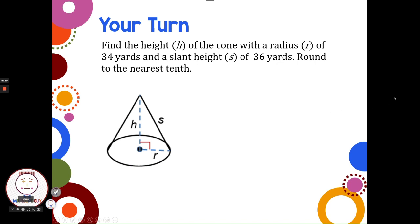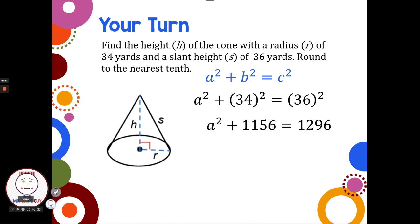We start by writing a squared plus b squared is c squared. Then we want to substitute in what we know. We got to get the hypotenuse in the right place. So the c has to be 36. 34 could be a or b, but 36, the hypotenuse, has to go in for c. Then we got 34 squared is 1,156, 36 squared is 1,296.